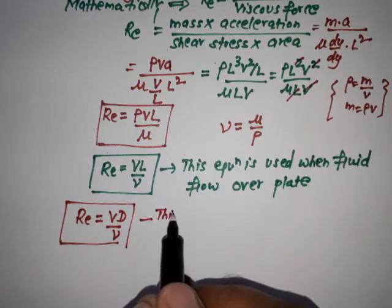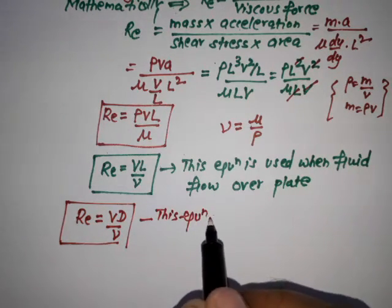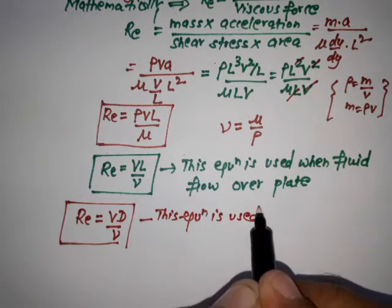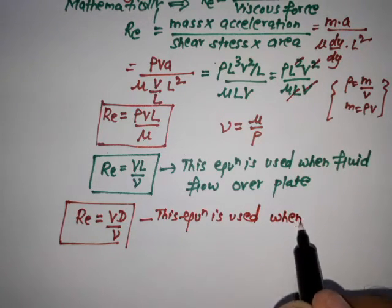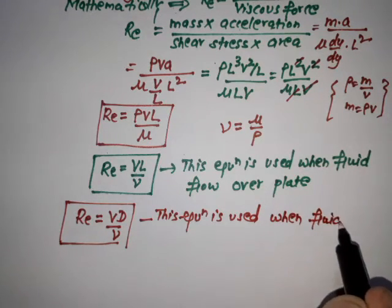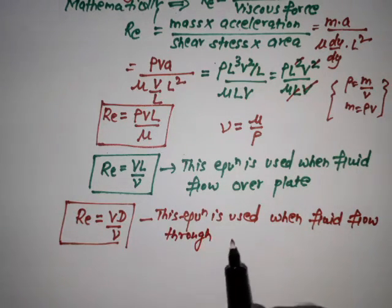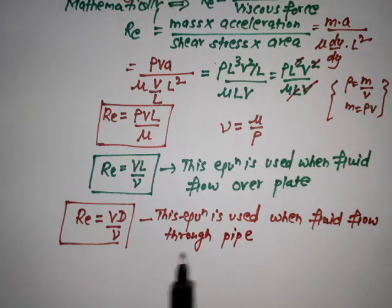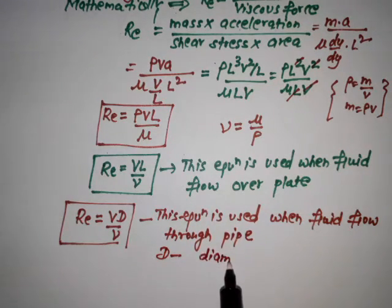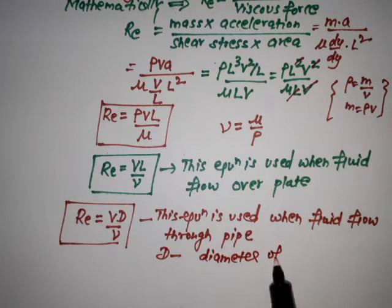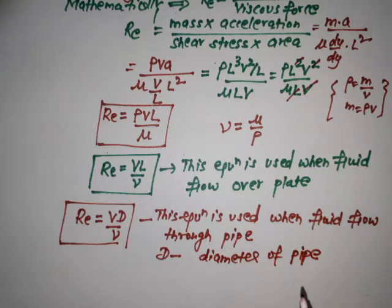And Re = VD/ν. This equation is used when fluid flows through pipe, and here D, that is the diameter of pipe.